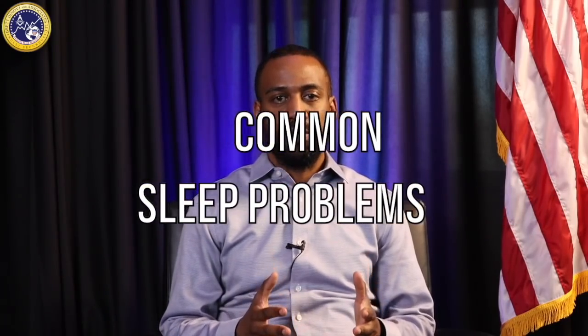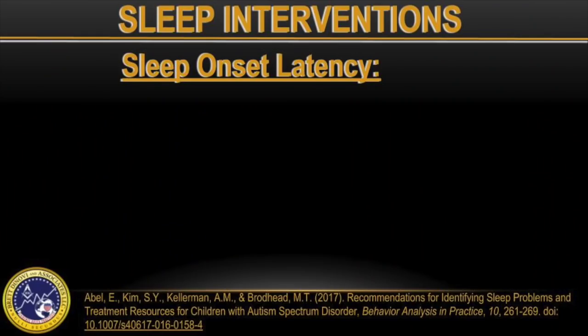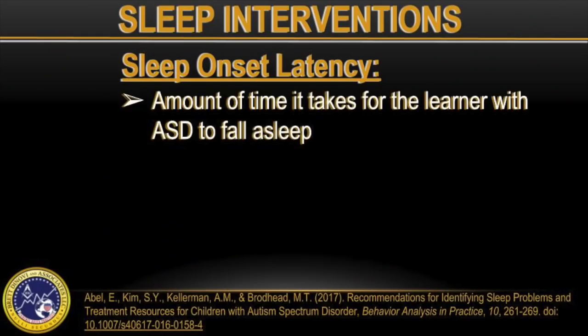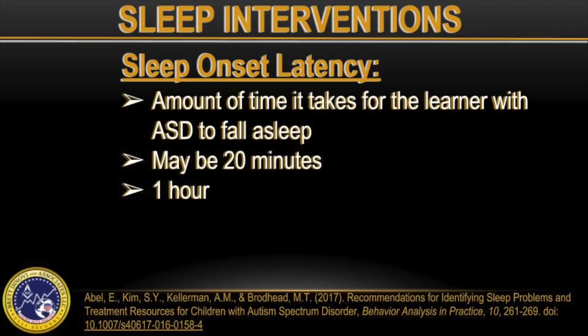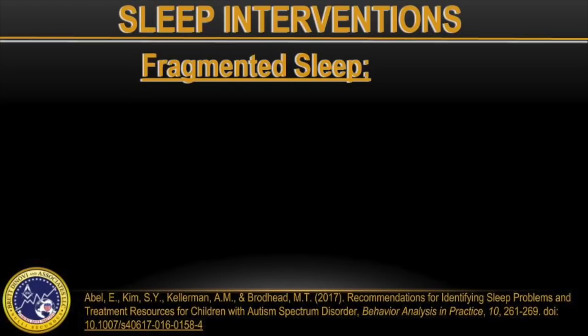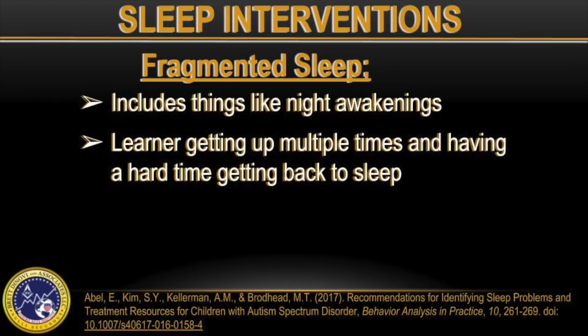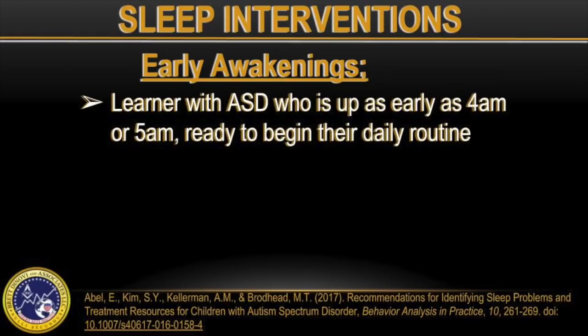The authors talk about some common sleep problems for people diagnosed with ASD. Let's talk about three of them. One is sleep onset latency — the amount of time it takes for the learner with ASD to fall asleep, which may range from 20 minutes to two or three hours each night. Number two is fragmented sleep, including night awakenings where a learner gets up multiple times and has a hard time getting back to sleep. Three is early awakenings — a learner with ASD who is up as early as 4 or 5 a.m., ready to begin their routine for the day.